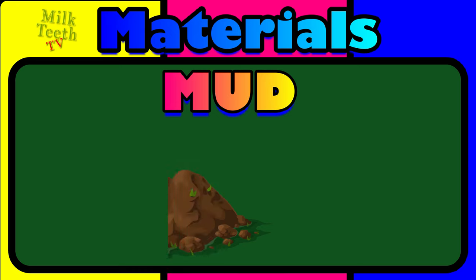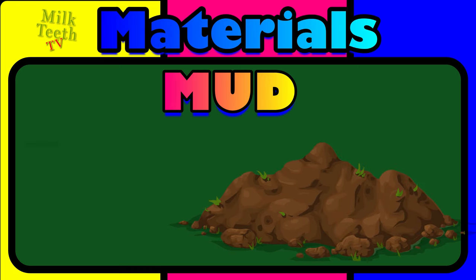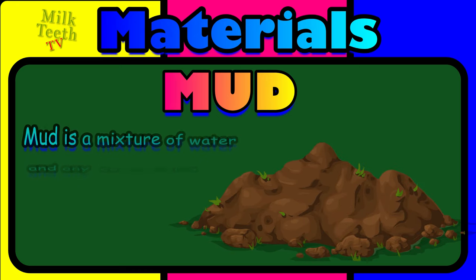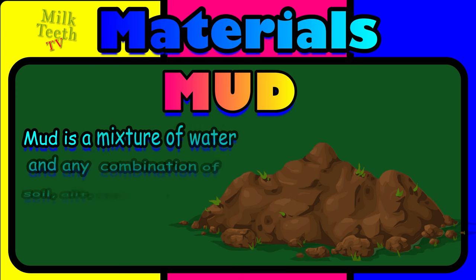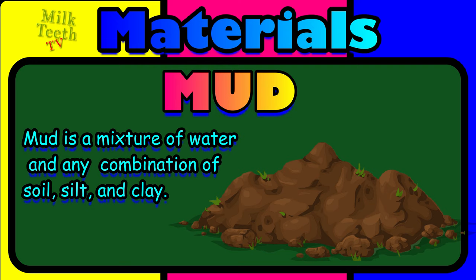The eighth type of material around us is mud. Mud is a mixture of water and any combination of soil, silt, and clay. Now let us see what we use mud for.